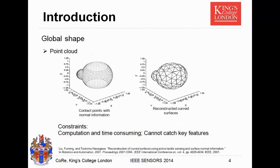For the global shape, some researchers are using computer graphics methods. For example, we have many points we can get from the object with normal forces, and from these points we can reconstruct the surfaces of the object. But this method is computationally expensive and time-consuming, and it can't capture key features — you have to get many points to reconstruct the object surface.